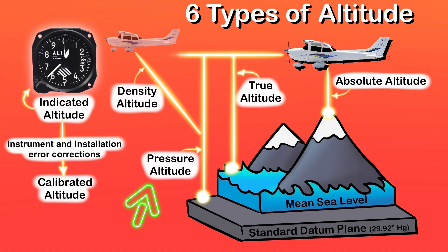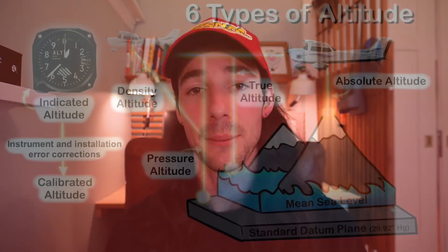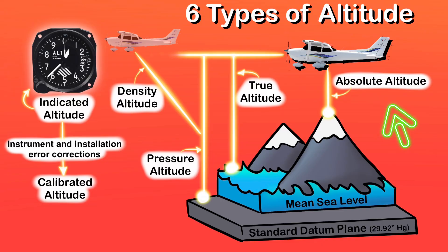True altitude is your actual altitude above mean sea level, calculated by taking the pressure altitude and correcting it for non-standard temperature and pressure. This is what you'll see on terrain charts and obstacle data. Absolute altitude is the height you are above the ground directly beneath you. It is constantly changing as the terrain beneath you changes, and it's measured by radio and radar altimeters.